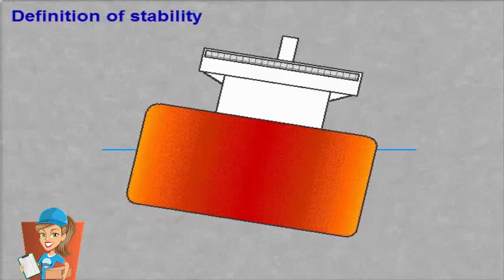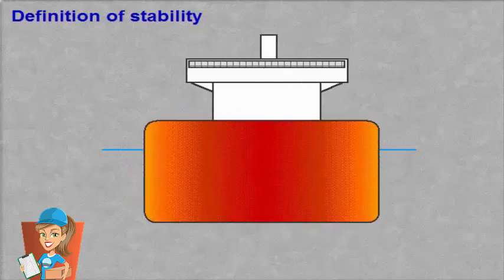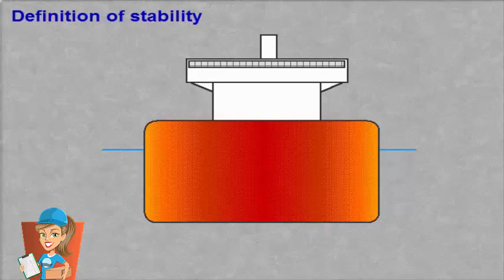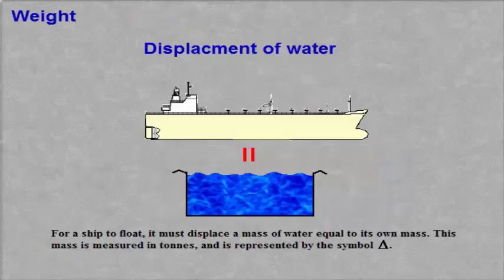Stability is the vessel's ability to return to an upright position after being heeled by an external force. For a ship to float, it must displace a mass of water equal to its own mass.